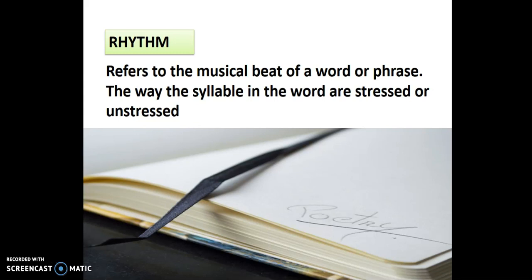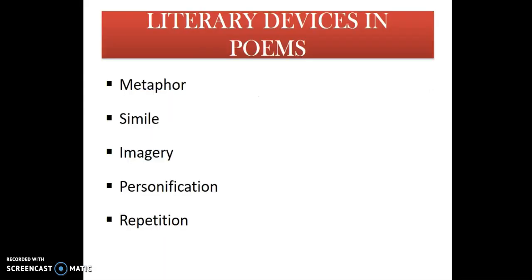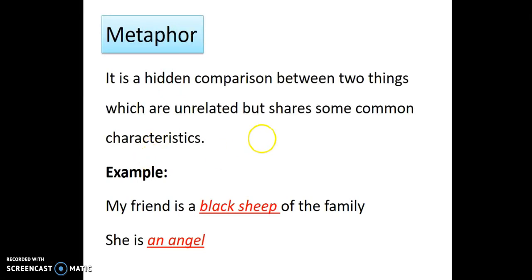Now let's look at literary devices in poems: metaphor, simile, imagery, personification, and repetition. Metaphor is a hidden comparison between two things which are unrelated but share some common characteristics. It is not obvious — the comparison is not directly stated.